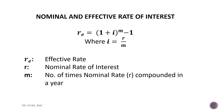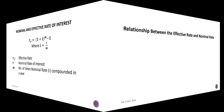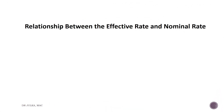If the rate of interest is compounded semi-annually, this implies m equals 2. If the interest rate is compounded quarterly, this implies m equals 4. Now we will discuss the relationship between effective rate of interest and nominal rate of interest, and how we can deduce the formula of effective rate of interest using the nominal rate.